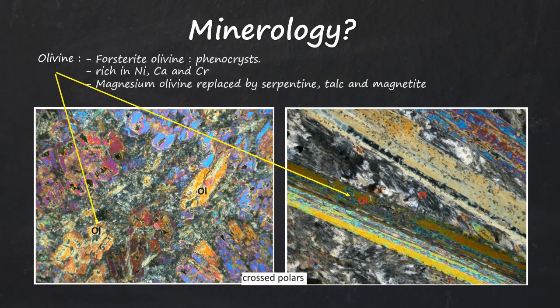Olivine. Forsterite olivine is seen as phenocrysts. They are rich in nickel, calcium and chromium. Magnesium olivine is seen replaced by serpentine, talc and magnetite.